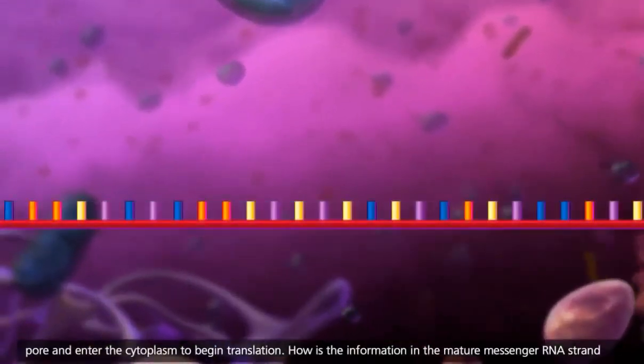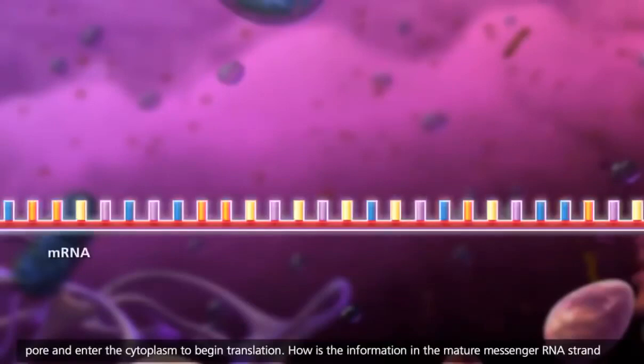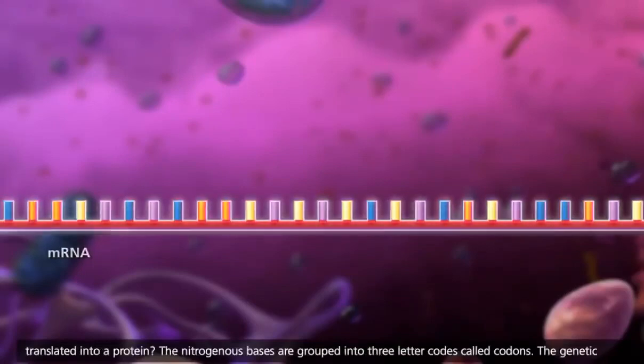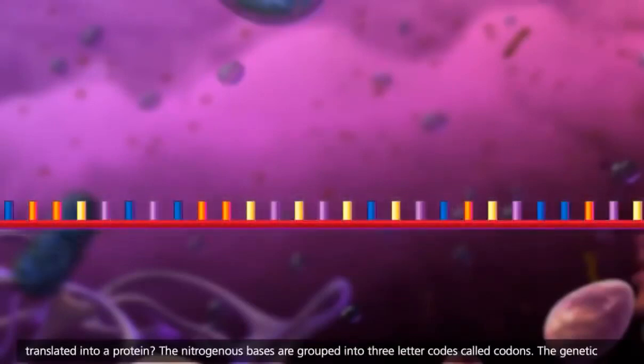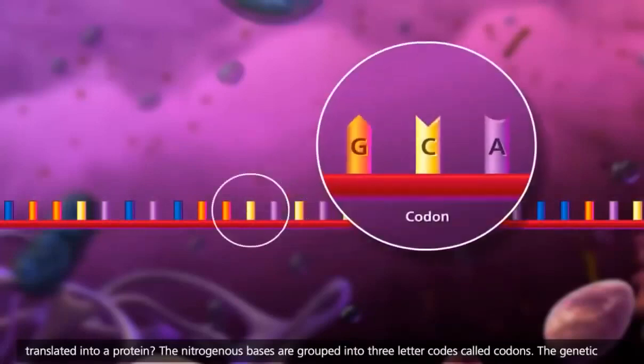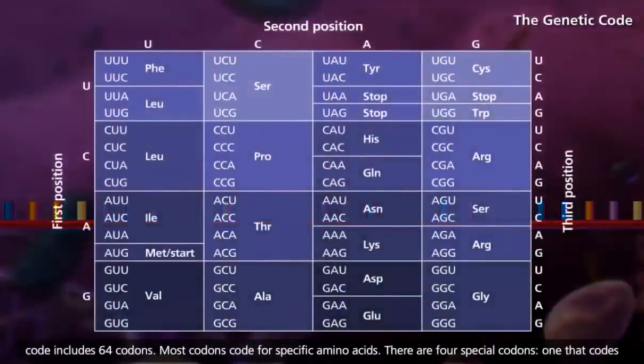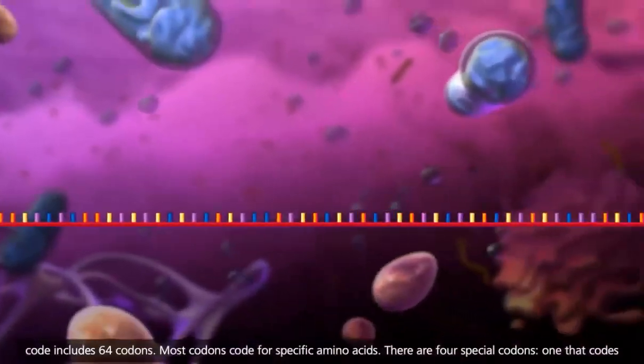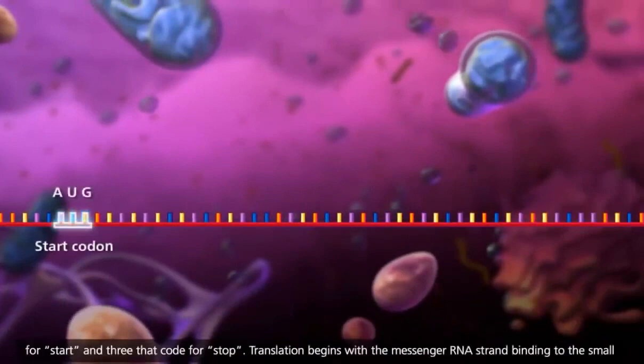How is the information in the mature messenger RNA strand translated into a protein? The nitrogenous bases are grouped into three-letter codes called codons. The genetic code includes 64 codons. Most codons code for specific amino acids. There are four special codons: one that codes for start and three that code for stop.